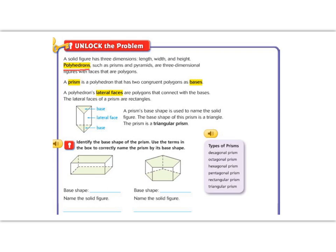Polyhedrons have two types: a prism and a pyramid. Let's talk about a prism first. A prism is a polyhedron that has two congruent polygons as bases. So if you look at this example here, we have a triangle on the top and a triangle on the bottom.